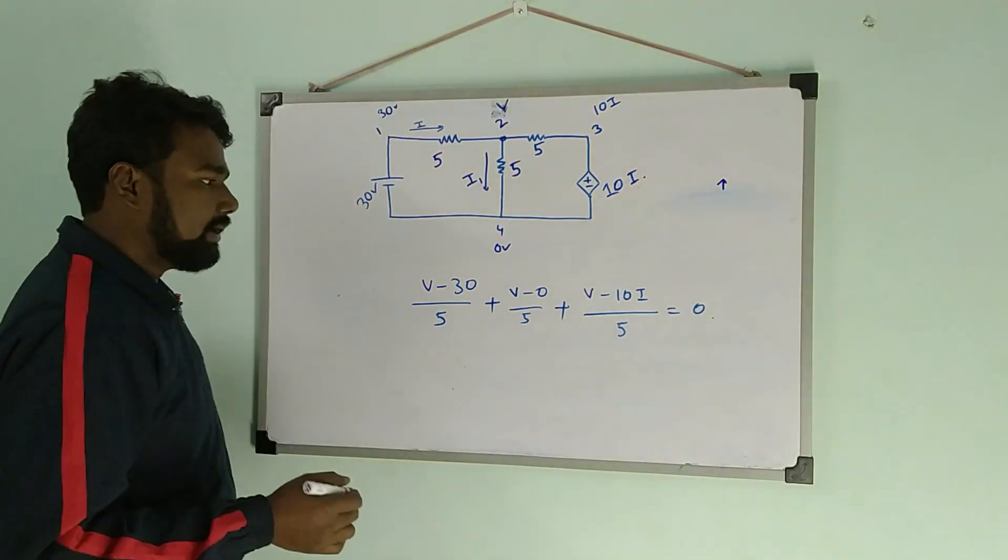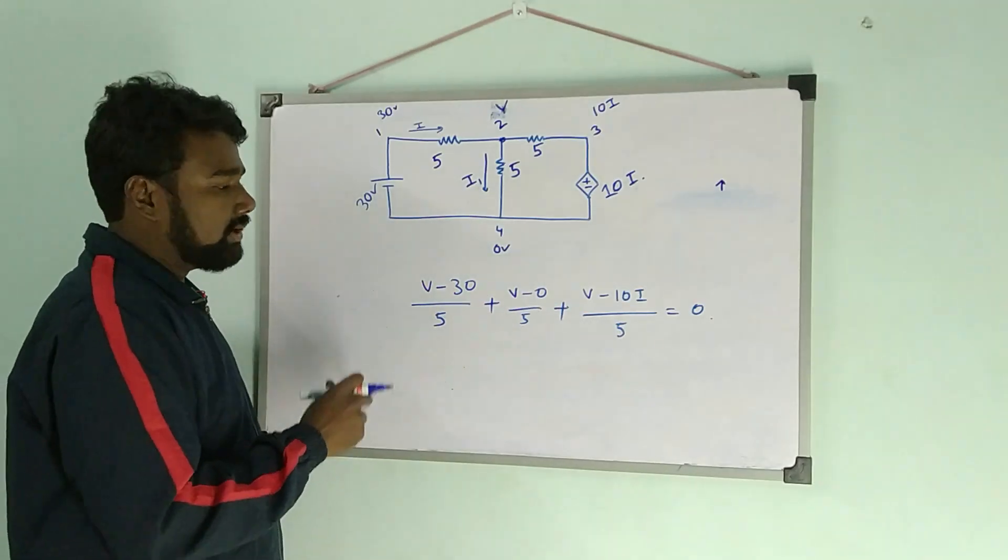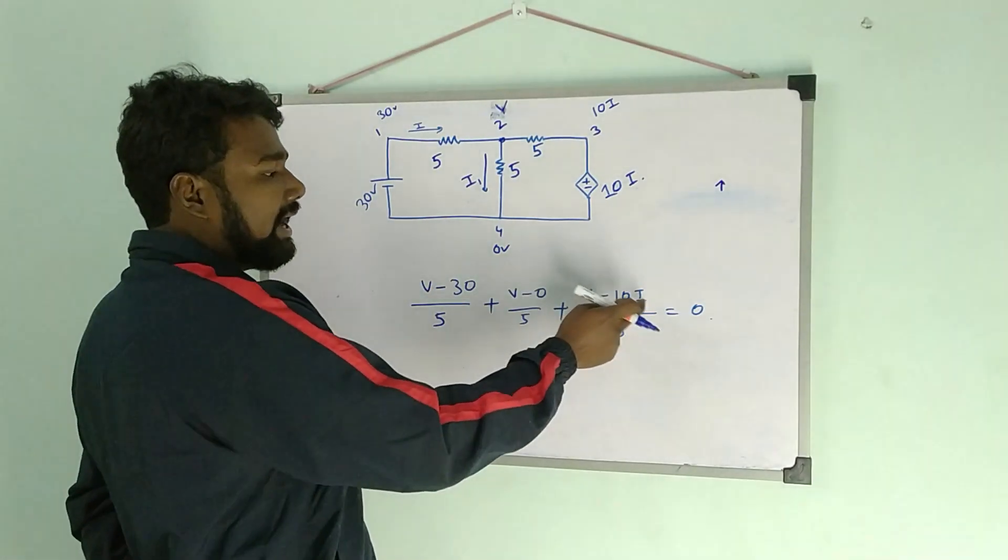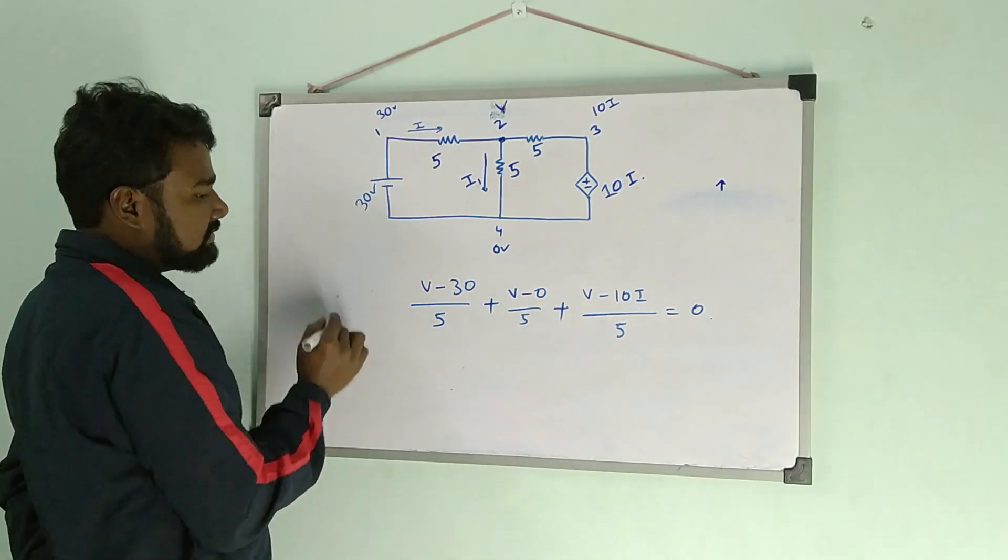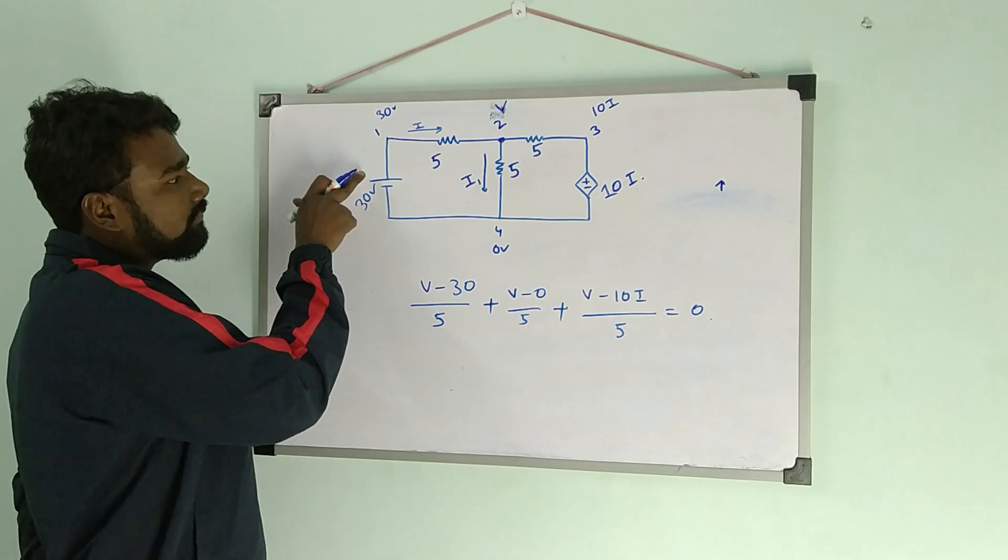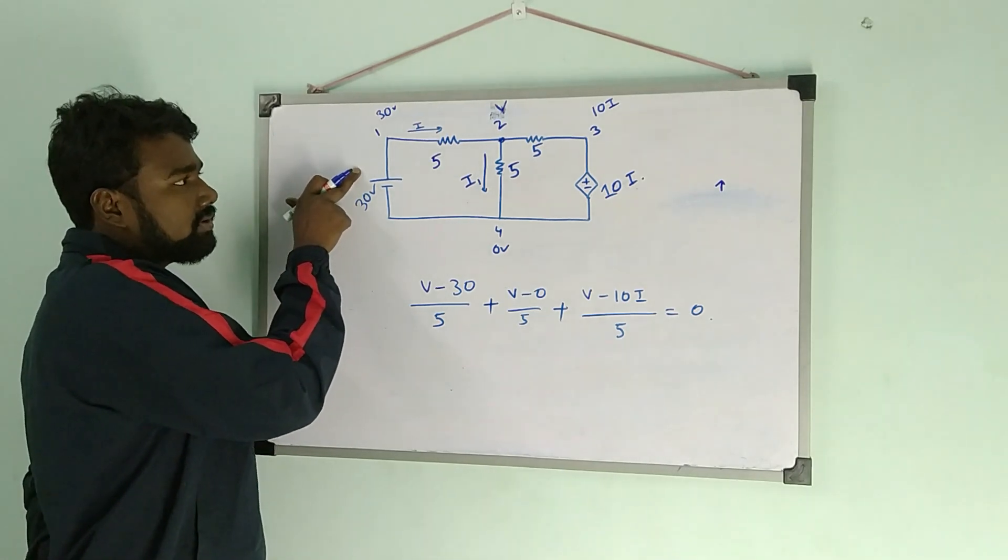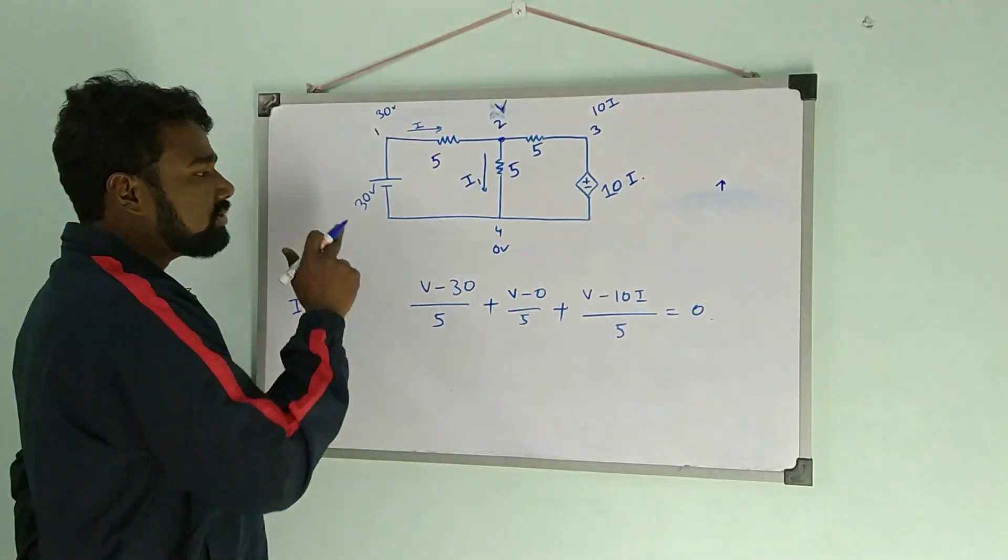Here you see that the number of equations is 1, but the variables are 2: one is v (unknown variable) and i is also an unknown variable. Now the value of i is the current flowing from the 30 volt voltage source to node 2, or from node 1 to node 2.